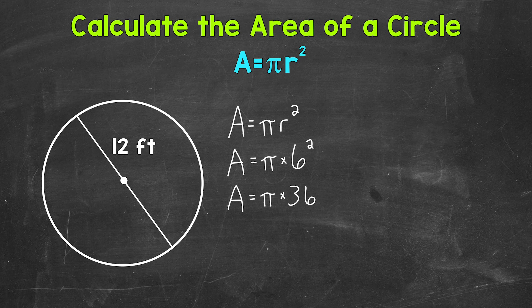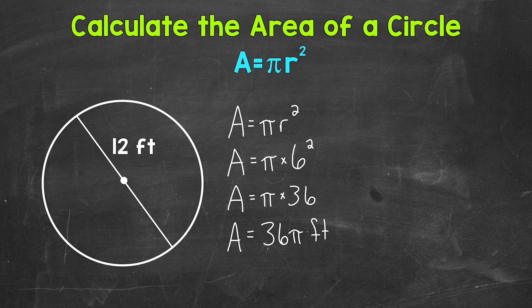One way to write the area of a circle is to write it in terms of pi, meaning we write our number in front of the pi symbol and then put our unit of measure. So we can write 36 pi square feet. That's one way we can express the area of that circle.